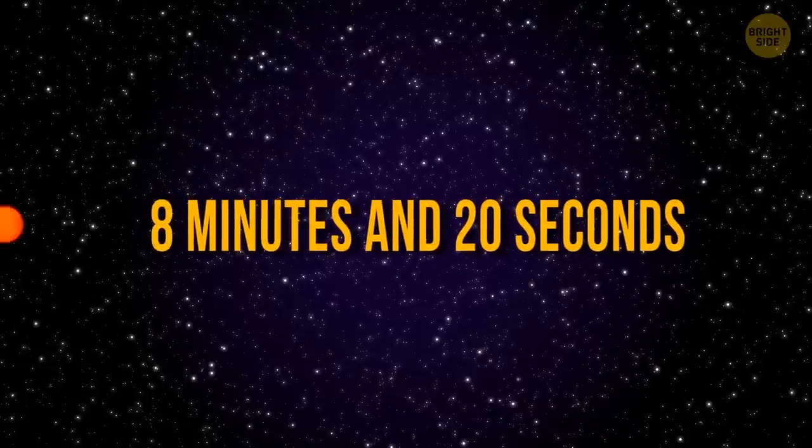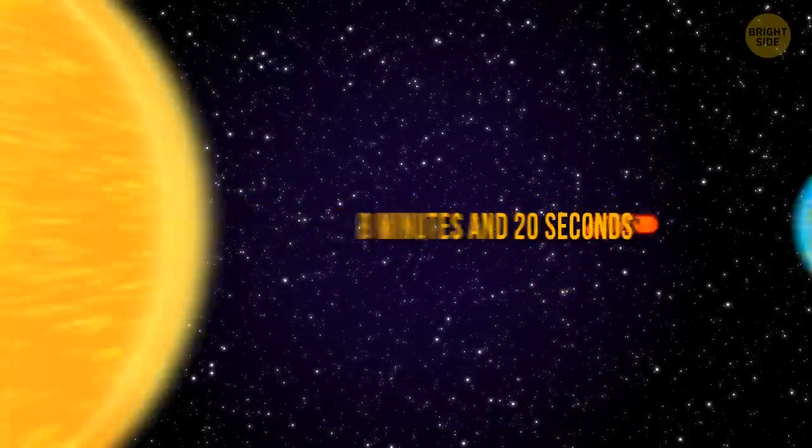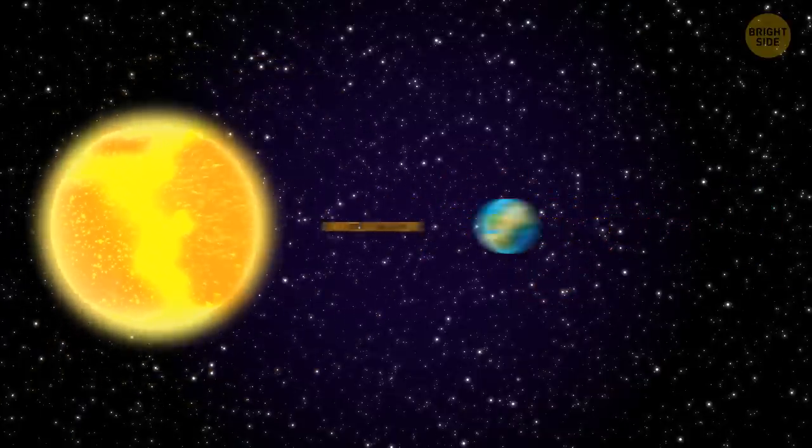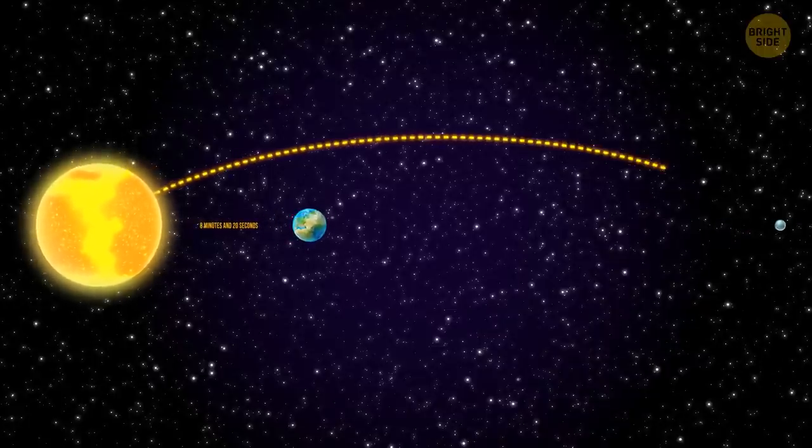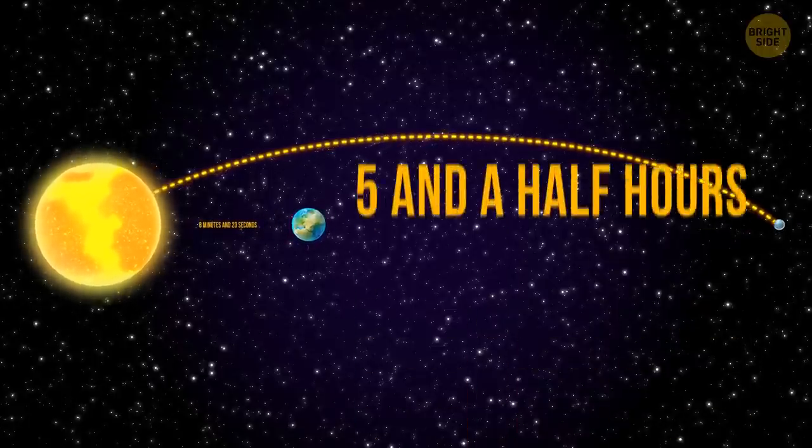8 minutes and 20 seconds. That's the time sunlight needs to travel from the sun to our planet. It's still not that much compared to what it takes for the light to reach Pluto. Five and a half hours.